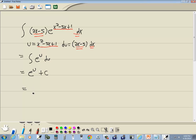And now we'll plug our u back in. So we're going to have e to the x squared minus 5x plus 1 plus c. And that's our answer.